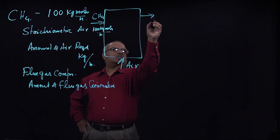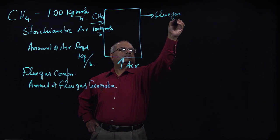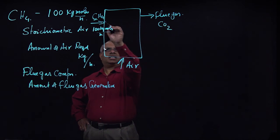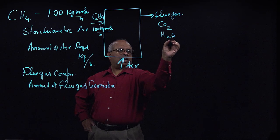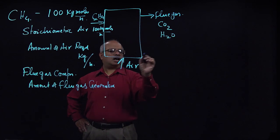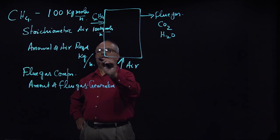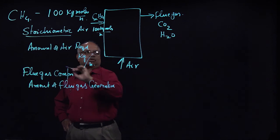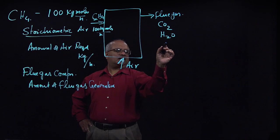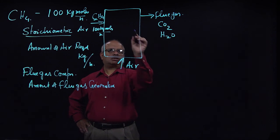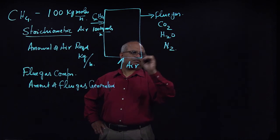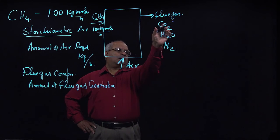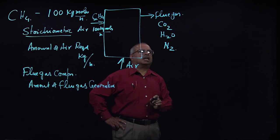So into this reactor, we are sending in methane at 100 kilogram moles per hour, and we need to send in enough air. Then the flue gases come out. Since we are burning in air, carbon goes to carbon dioxide, hydrogen goes to water vapor, and air would have oxygen and nitrogen. We need to figure out the amounts of these things.